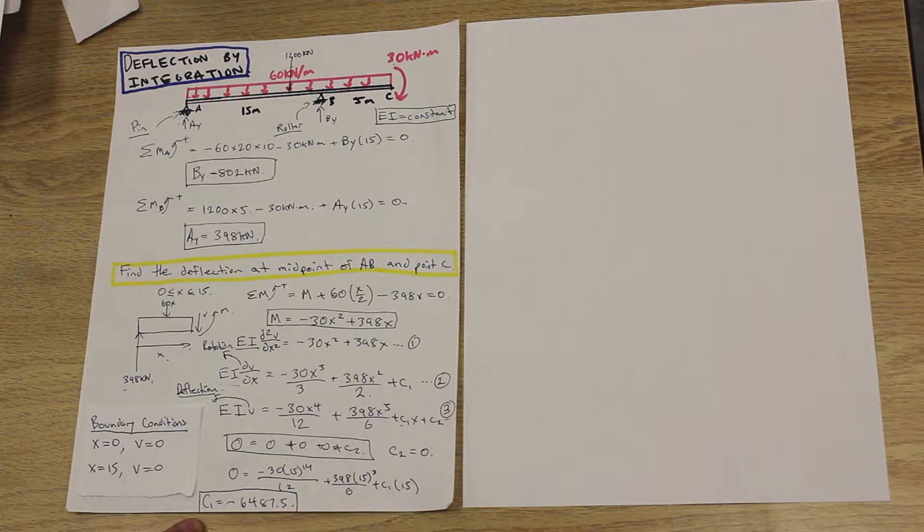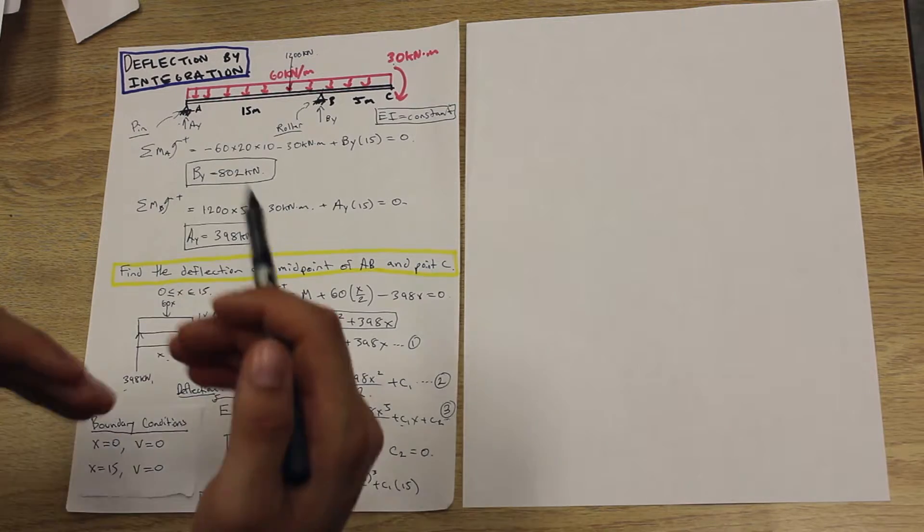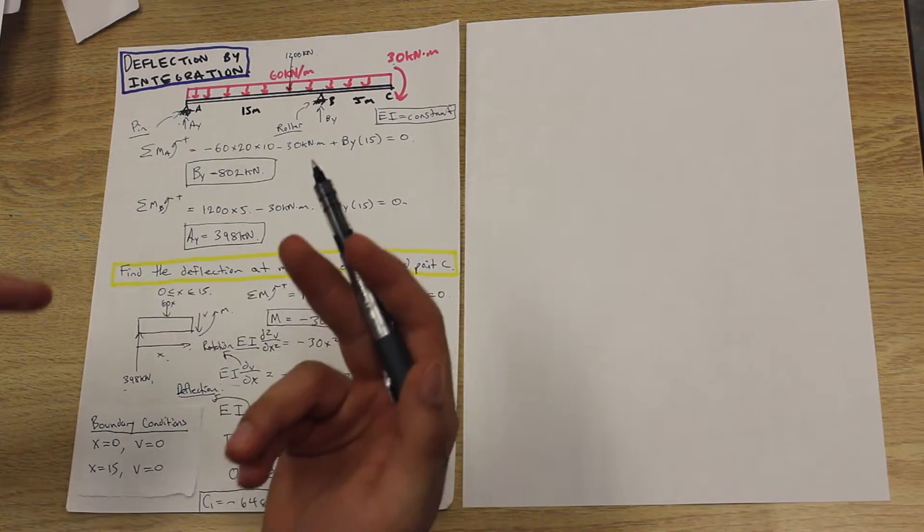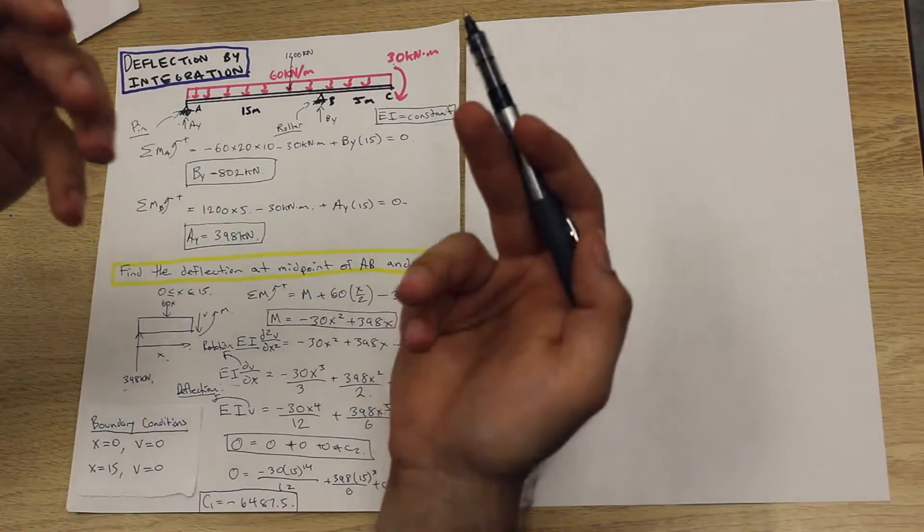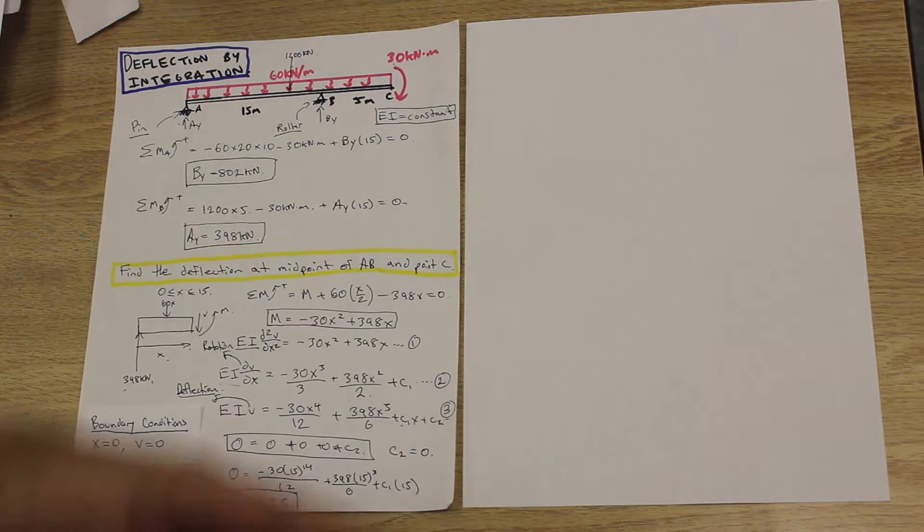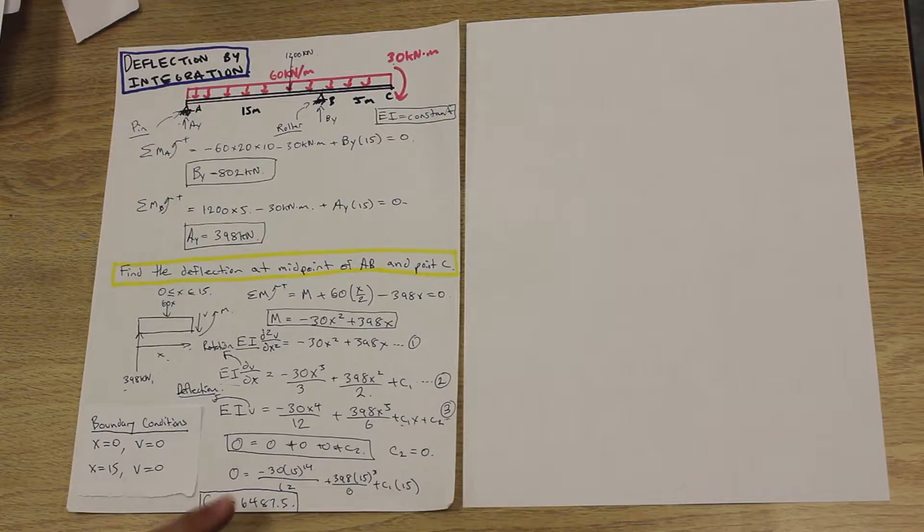So whenever you integrate, you need to put that constant back in the equation, and essentially that's what we did here by adding a C1 and a C2, and we solved for C1.